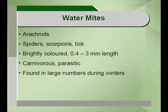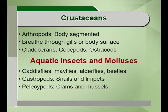Crustaceans, aquatic insects and mollusks form the next type of biodiversity. Arthropods have segmented bodies with paired jointed appendages and breathe through gills or the body surface, with examples including ostracods, copepods and cladocerans. Aquatic insects and mollusks belong to caddisflies, mayflies, alderflies, dragonflies, beetles, snakes, snails, clams and mussels.